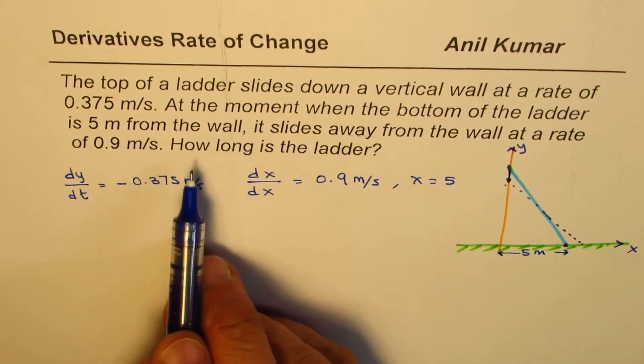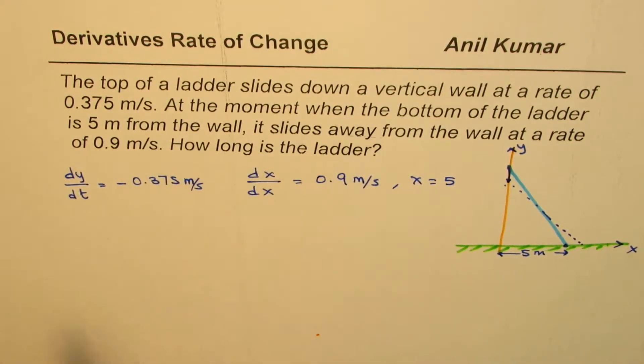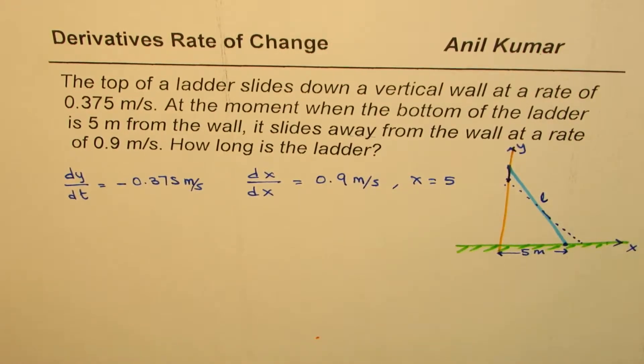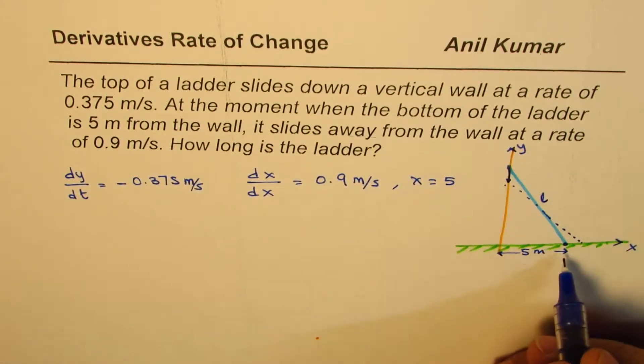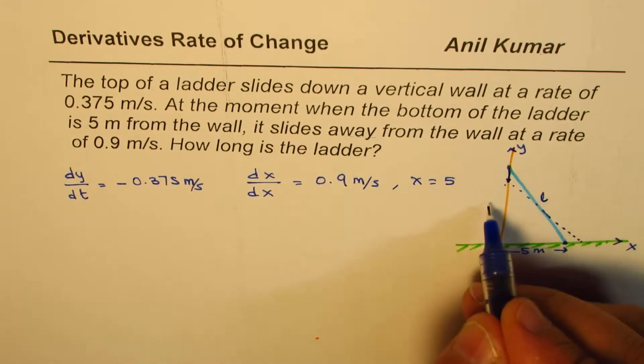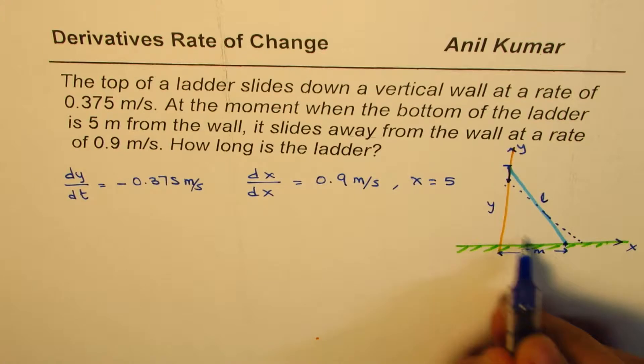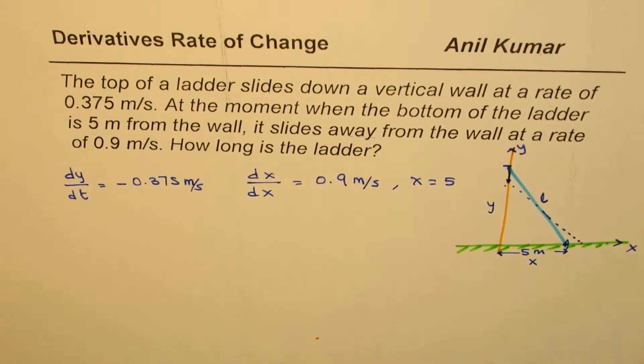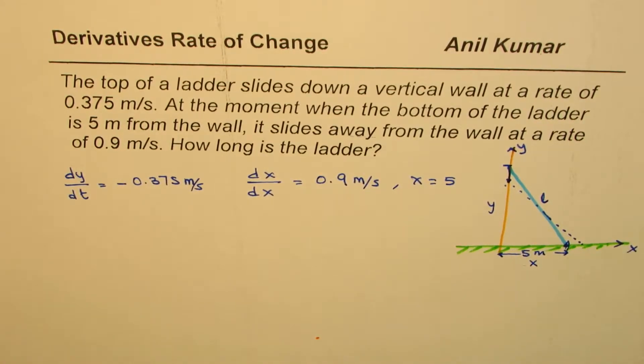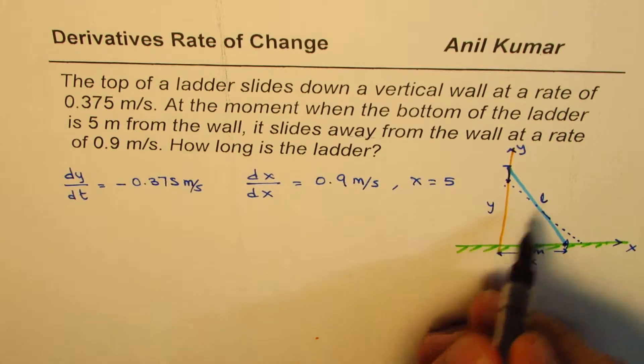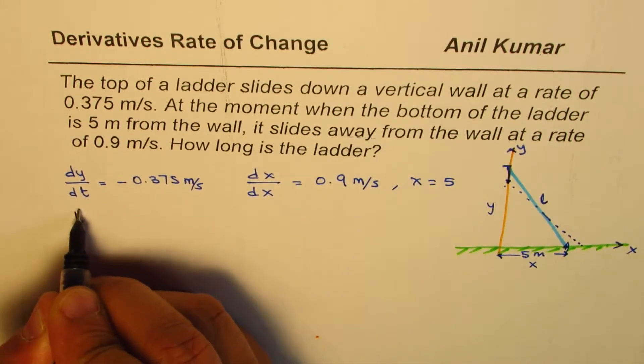Now we need to find how long is the ladder. Let us say that the length of the ladder is L. So at this instance, let's say we have y on this axis and 5 here. Well, let's take in general x. So in general, the relation between length and x and y is going to be L² = x² + y², correct?